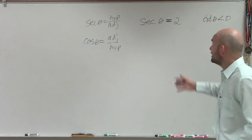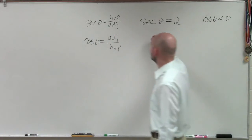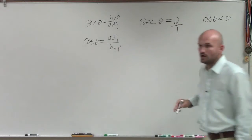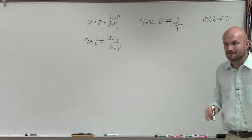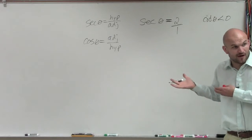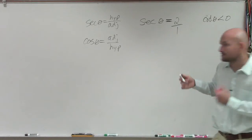So therefore, if I know secant, I can rewrite this then as 2 over 1. Yeah? So can I create a triangle off of that information? Yes.